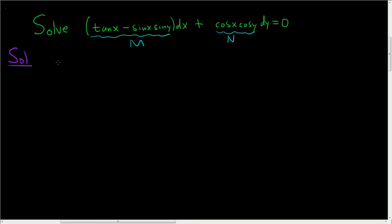And you want to start by checking del M del Y. An easy way to remember this is if there's an X here, you got to take the partial with respect to Y. If there's a Y here, you got to take the partial with respect to X.